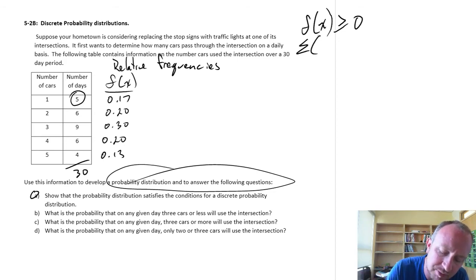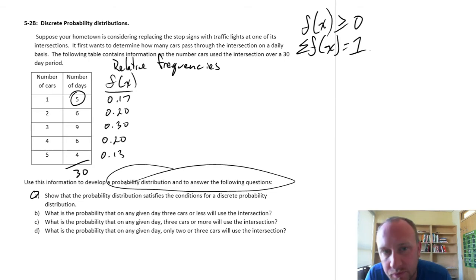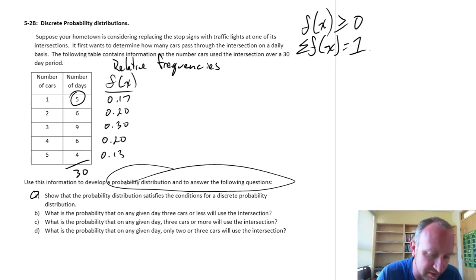The next, do they add up to 1? In other words, on a randomly selected day, is there a car going through the intersection? I don't have 0 as an option here. There's always something happening at this intersection. So our probability, if we were to add all of these up, looks like they add to 1.